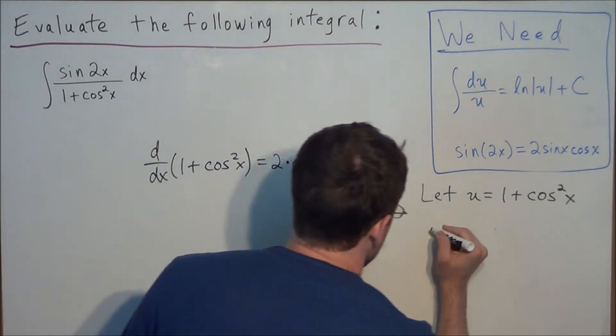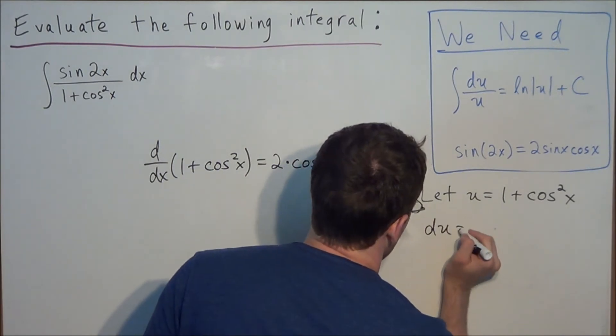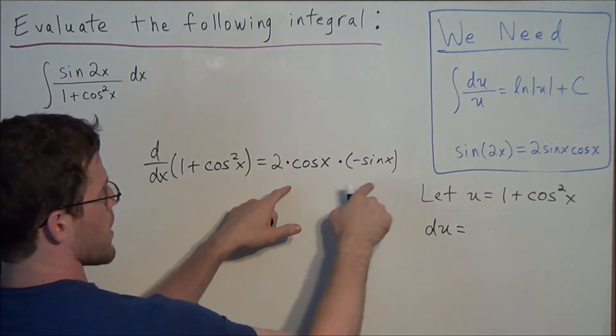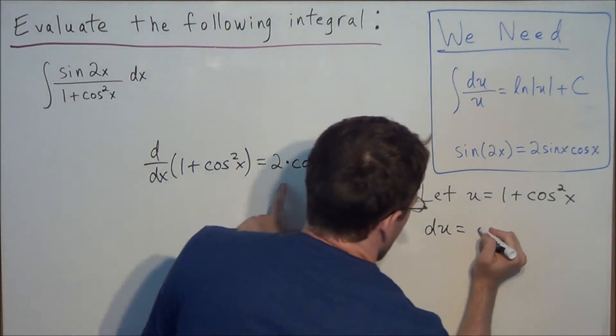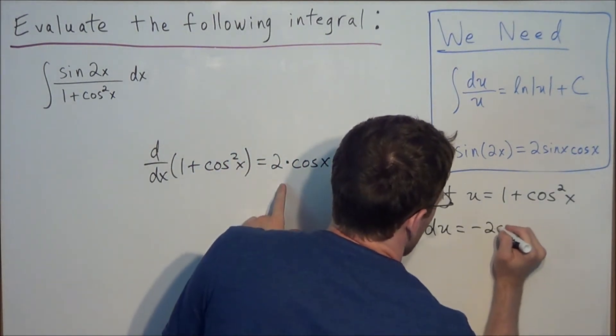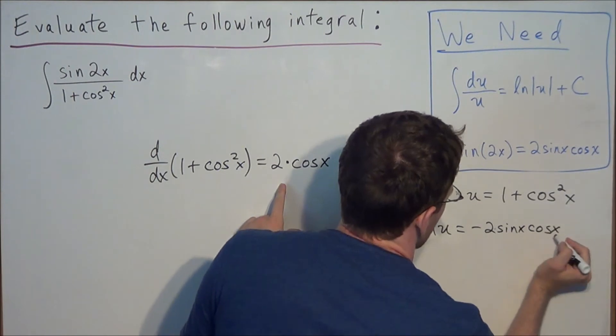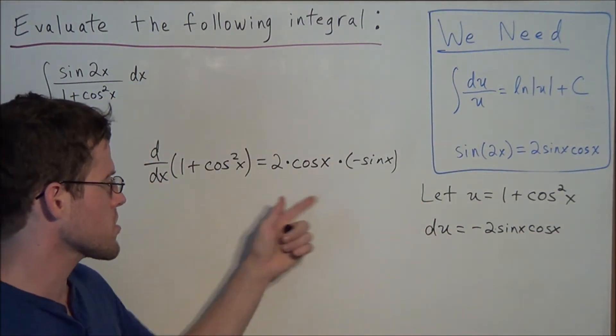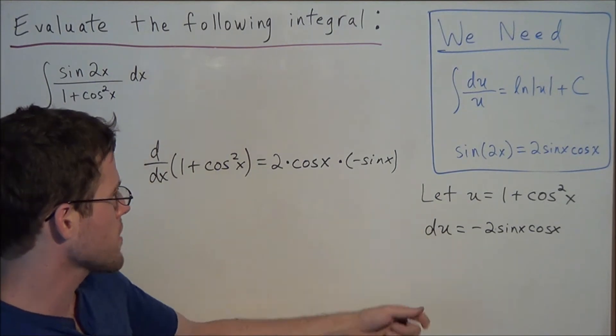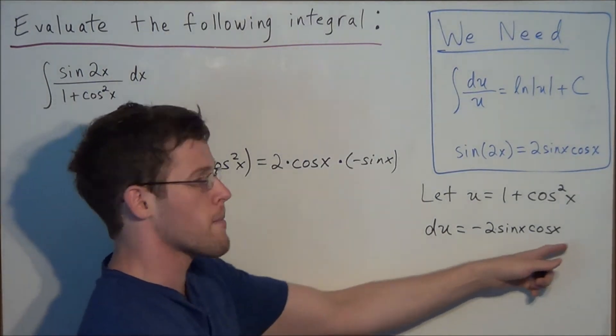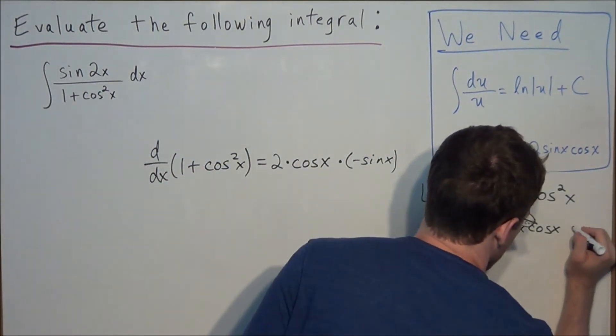So this allows us to write that du is equal to, and now we'll just simplify everything, negative 2 sine x cosine x. So all we did was use commutativity, we can rearrange the factors, and we have negative 2 sine x cosine x, but remember, we have to include our dx at the end.